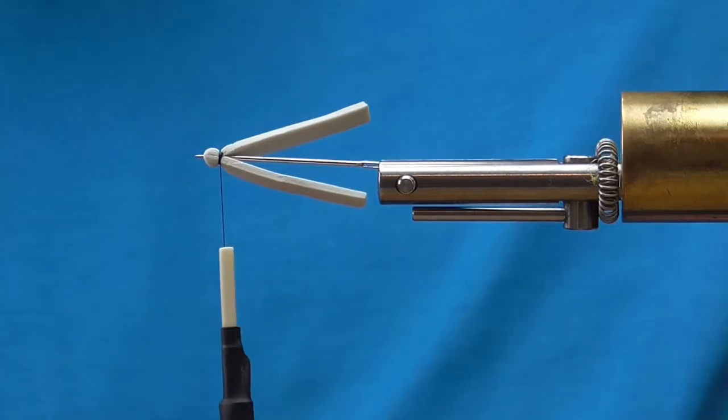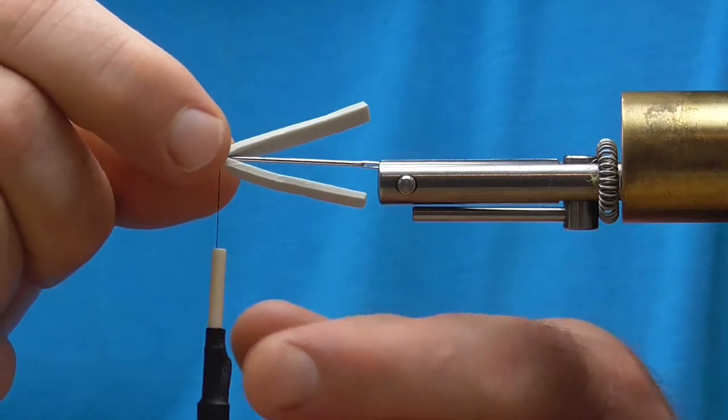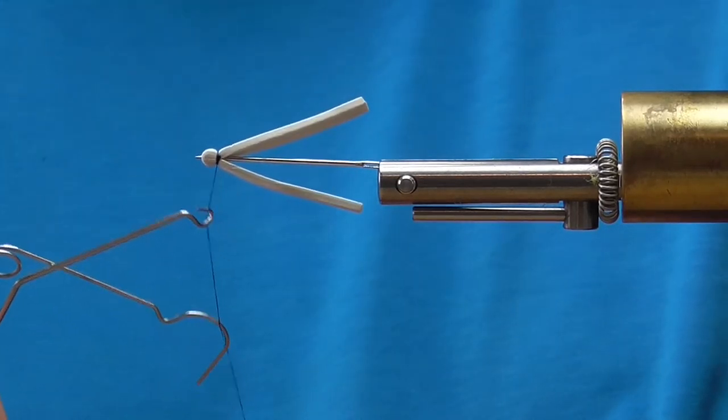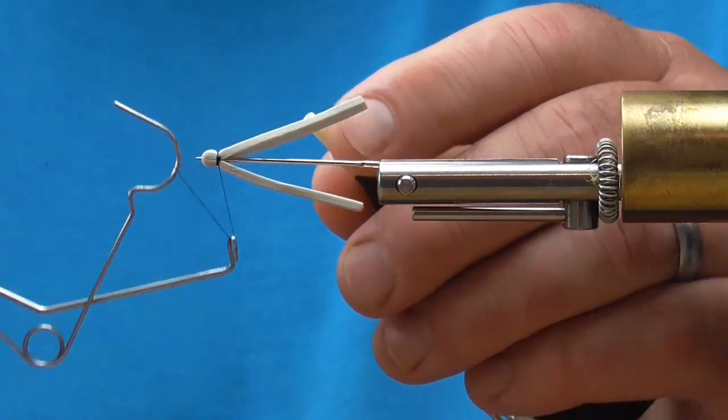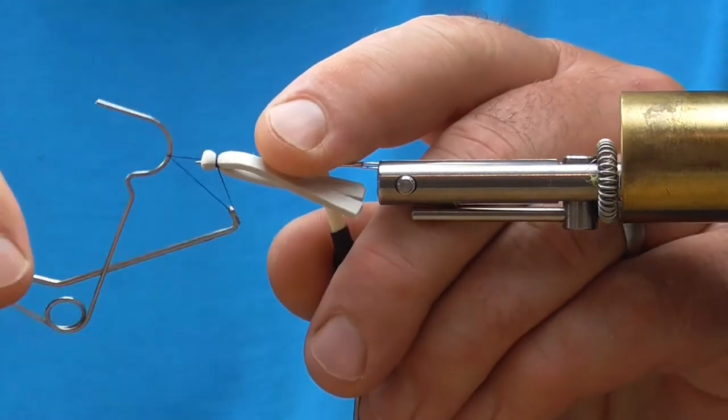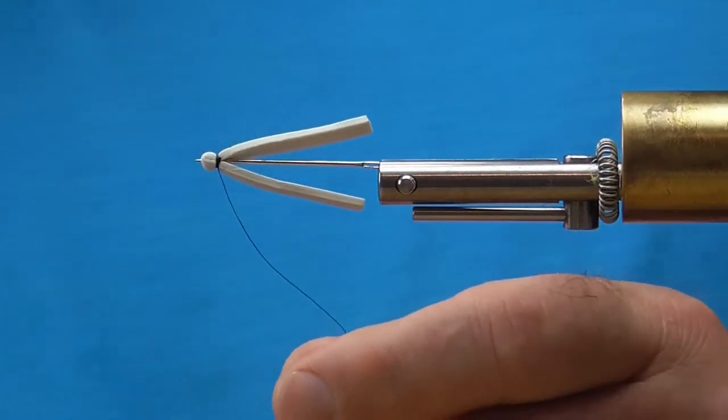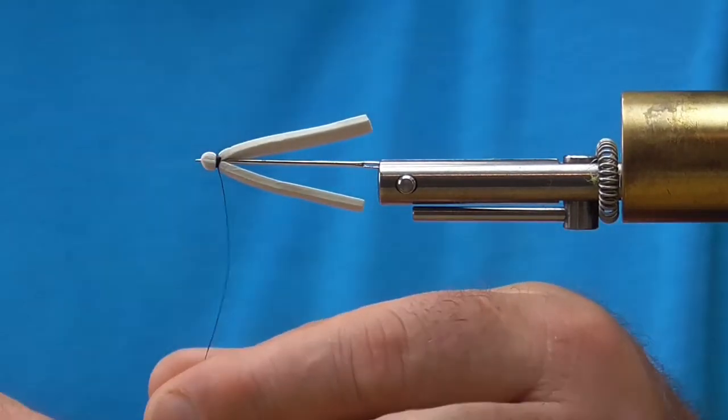To secure this nicely I'm going to go ahead and do a quick whip finish, just a little three turn whip so that I've got that knotted down and that's not going to come unraveled.